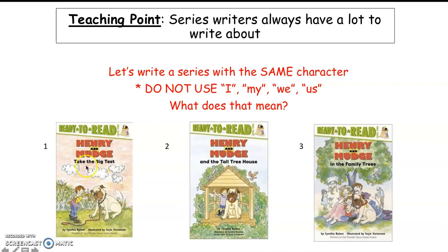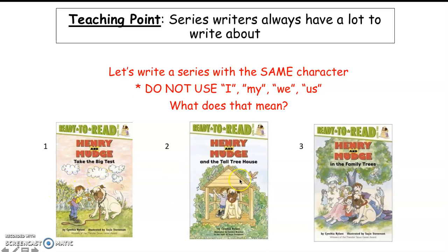Book one is Henry and Mudge Take a Big Test. In book two, Henry and Mudge and the Tall Treehouse. In book number three, it's Henry and Mudge in the Family Tree. So to review: series books have the same characters — Henry and Mudge — but different adventures. This book they take the big test, this book they're in a tall treehouse, and in this book they learn about their family tree.